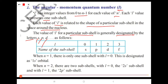L=0 corresponds to the S sub-shell, L=1 to P, L=2 to D, and L=3 to F. When N=1, there is only one sub-shell with L=0, designated as the 1S orbital. When N=2, there are two sub-shells: with L=0 the 2S sub-shell, and with L=1 the 2P sub-shell.